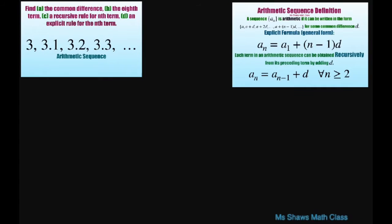We know it's an arithmetic sequence because we have a common difference. If you look at these, the common difference is you just keep adding 0.1. So 0.1, you just keep adding that. So your common difference equals 0.1. This is part A.